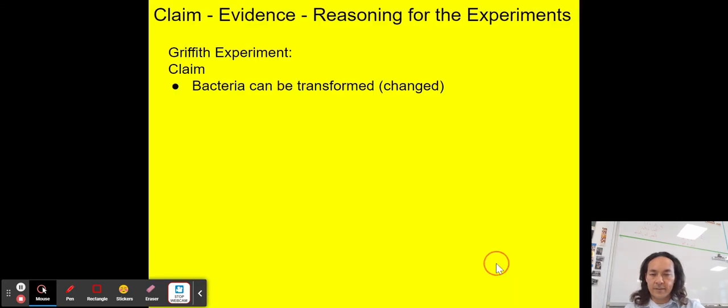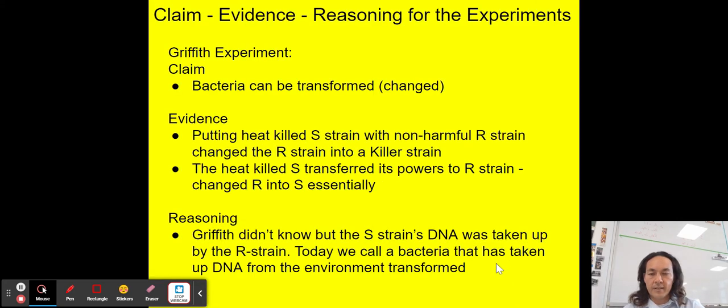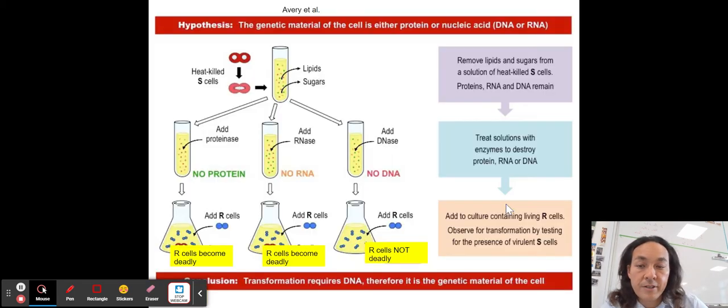So let's look at what I would write for claim evidence reasoning here, and you can pause the video. But my claim for the Griffith experiment, bacteria can be transformed. The evidence, as you saw on that graphic, was the heat killed S transferred its powers or its properties to the R strain, making it deadly. And that is transformation.